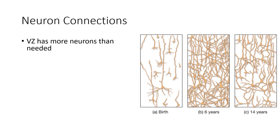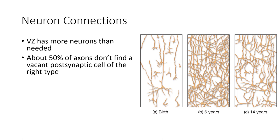Looking closer at neuron connections, the ventricular zone has more neurons than it needs. At birth, this zone is very dense. By six years it's dense, and by 14 years it's noticeably thinned out. This is because about 50% of the axons of neurons don't find a vacant cell of the right type to connect with. Eventually, what is called synaptic pruning occurs — cells that haven't found a post-synaptic cell to bind with start to die off.